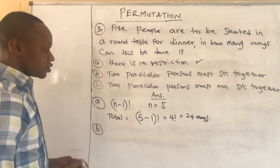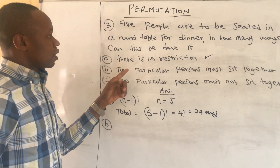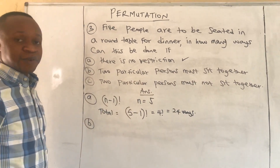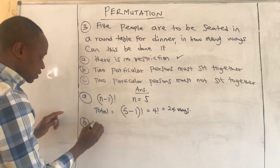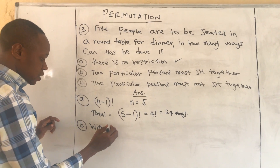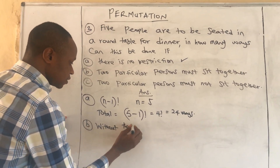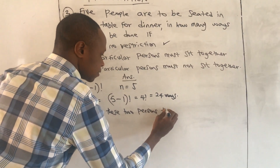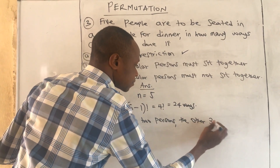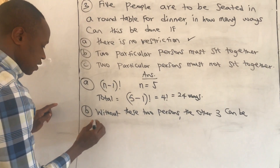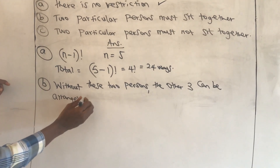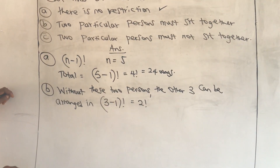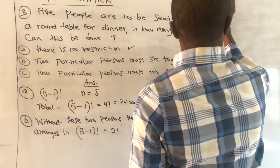For Part B of the circular permutation: in how many ways can five people be seated at a round table if two particular persons must sit together? Without these two persons, the other three are arranged in a circle in (3−1)! = 2! ways.